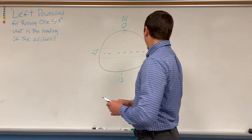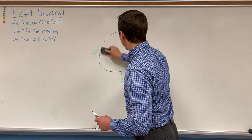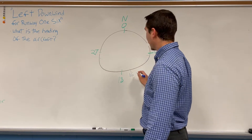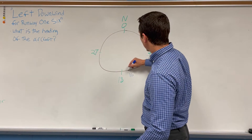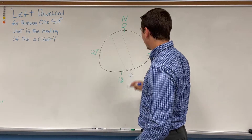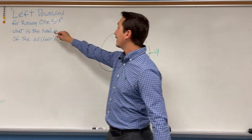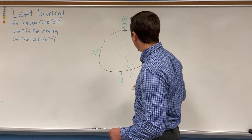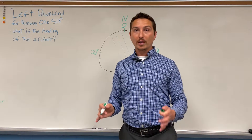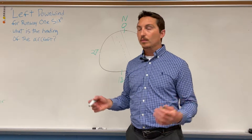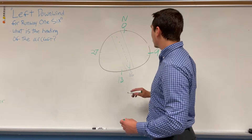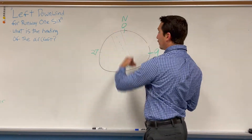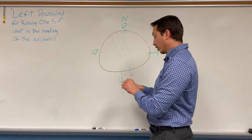Runway 16 means the aircraft is heading at 160 degrees, which is close to south. So we have a runway here — runway 16 — and the aircraft is going to land at 160 degrees, in that direction. That also tells us the wind direction: the wind is coming out of the south-southeast, out of about 160 degrees, blowing toward the aircraft as it lands. Remember, we want a headwind when landing and taking off.